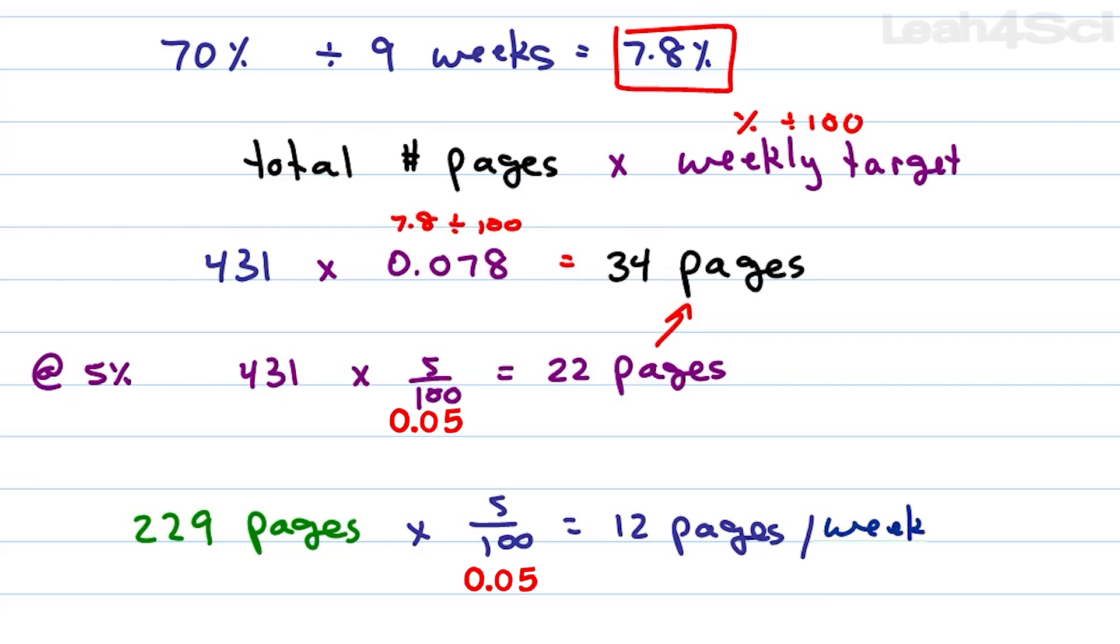Notice that I'm always rounding up. There are going to be days where the content is really difficult and the going is slow. So if you're aiming for a higher number of pages, you build in that buffer for when the going gets tough. At 5% you are completing 12 pages a week but now that you're looking to bump it up to 7.8%, we're looking at 229 times 7.8 divided by 100 or 0.078. This comes to 17.86 or 18 pages per week. Again ask yourself the difference between 18 and 12. Is that something doable and realistic?